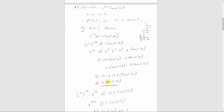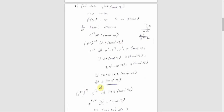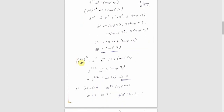So 3 raised to 302 equals 3 raised to 292 times 3 raised to 10, which is congruent to 1 times 3 mod 13. That is 1 into 3 mod 13, and the answer is 3 mod 13.